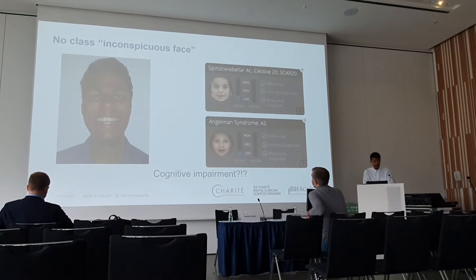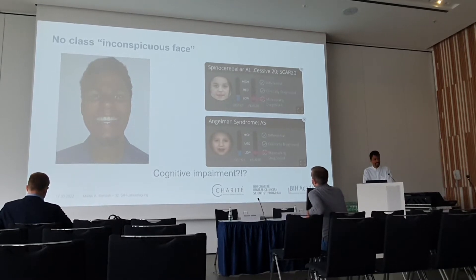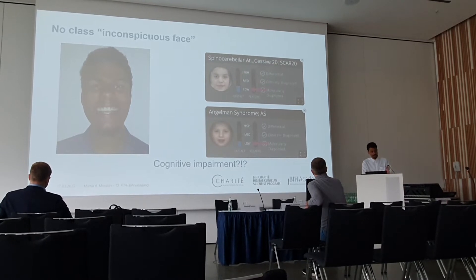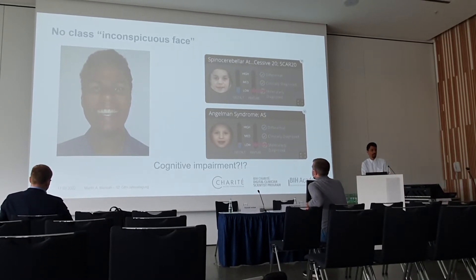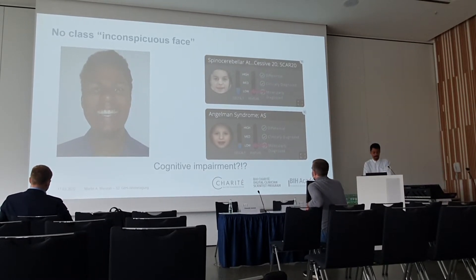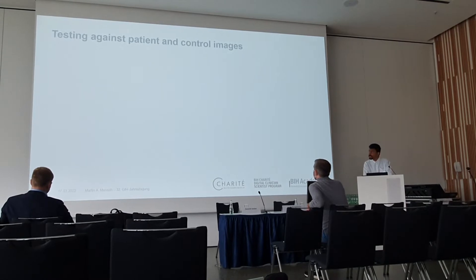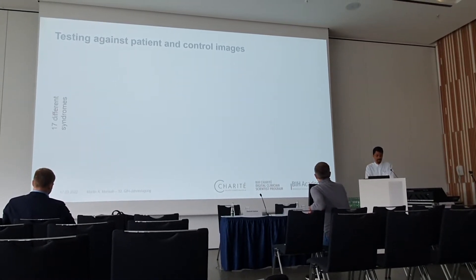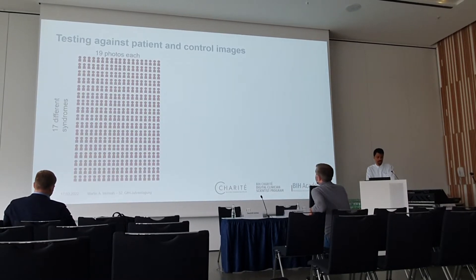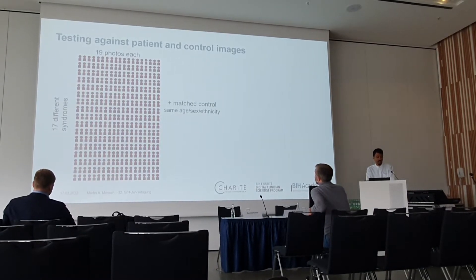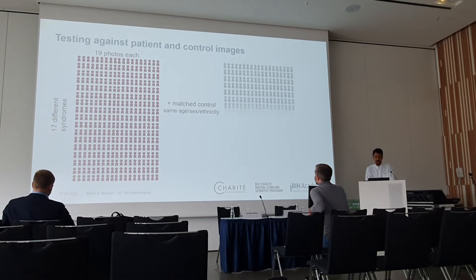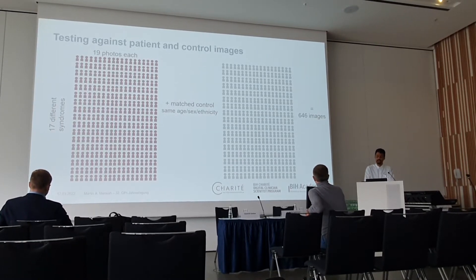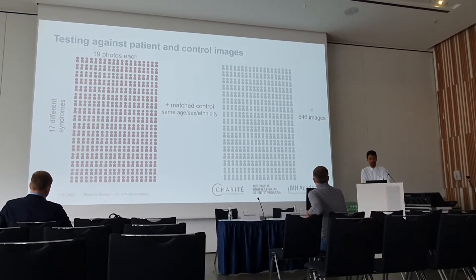However, and that's interesting, the score yielded is low. This means there is potential for the tool to discern affected from non-affected individuals. We tested this hypothesis and the tool's accuracy on 17 different syndromes. We collected 19 photos of each syndrome and matched them by age, sex, and ethnicity to a cohort of unaffected individuals. So in total, our test cohort contains 646 images.